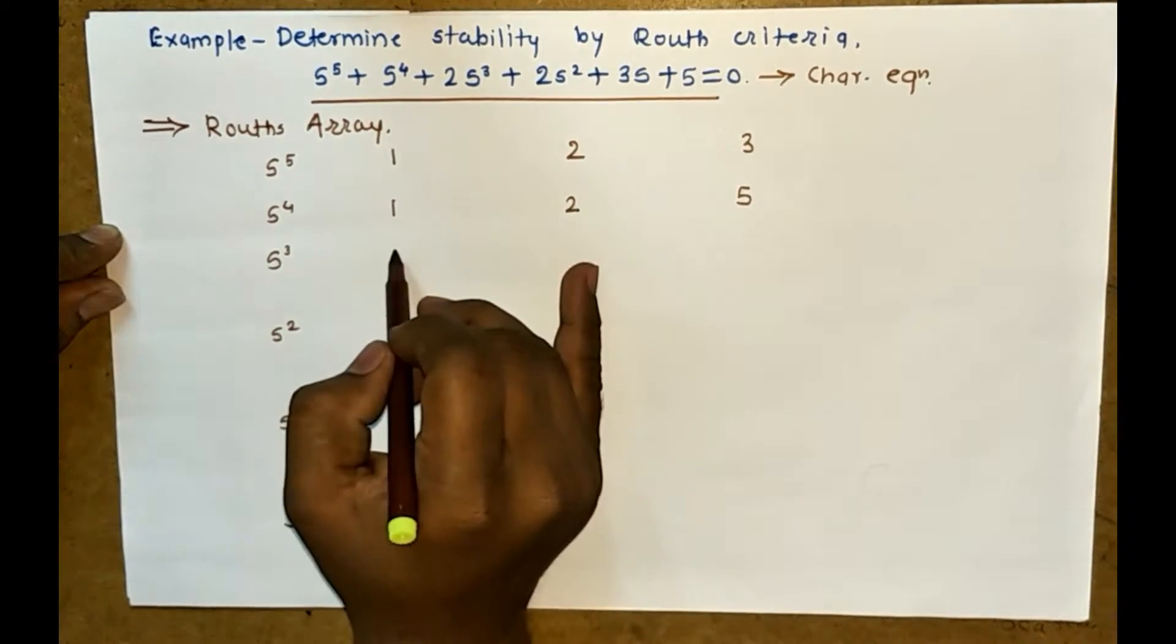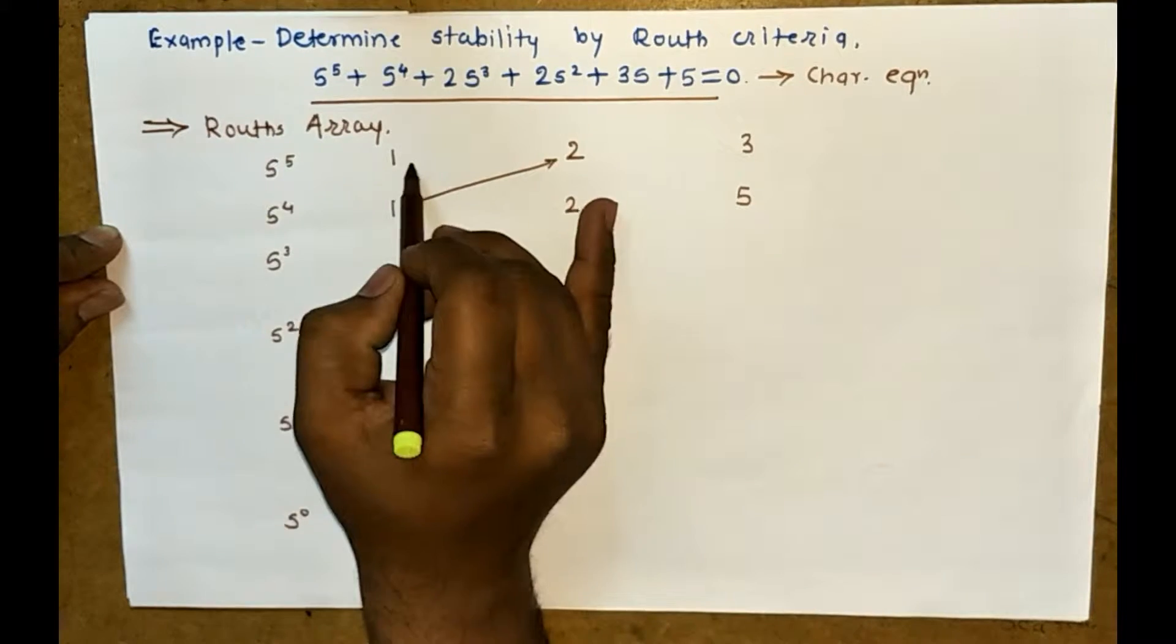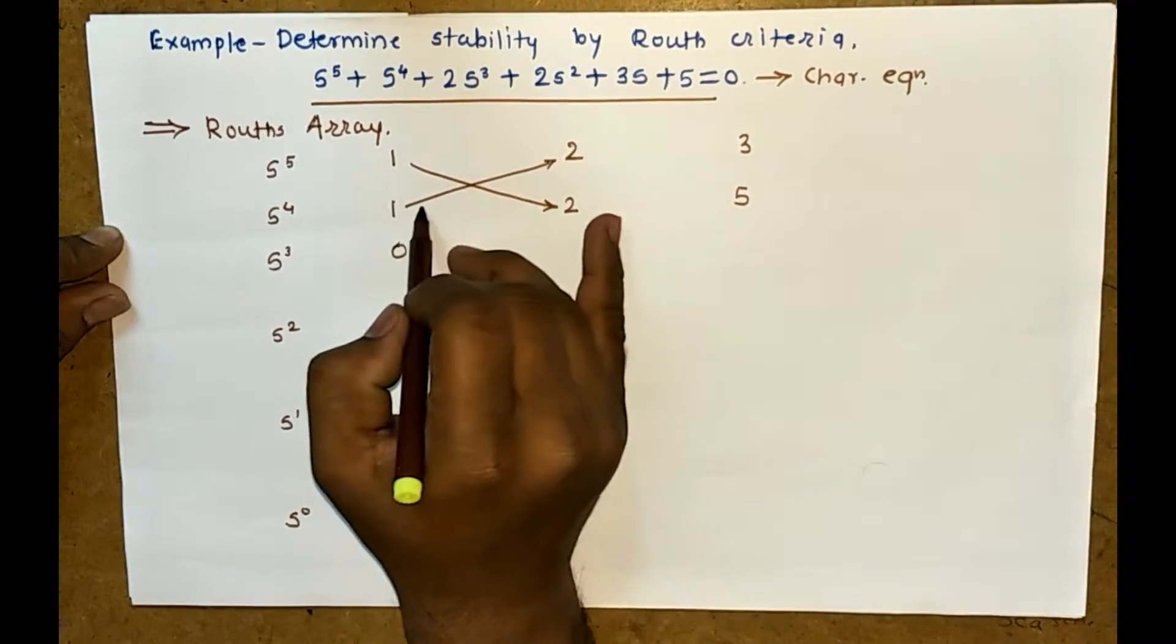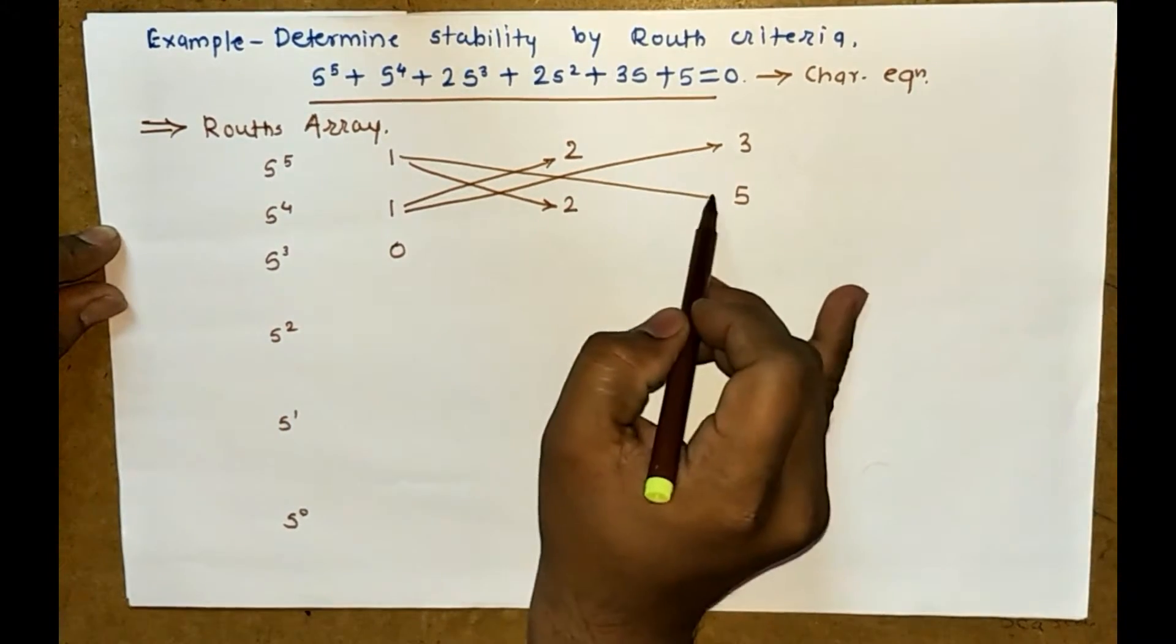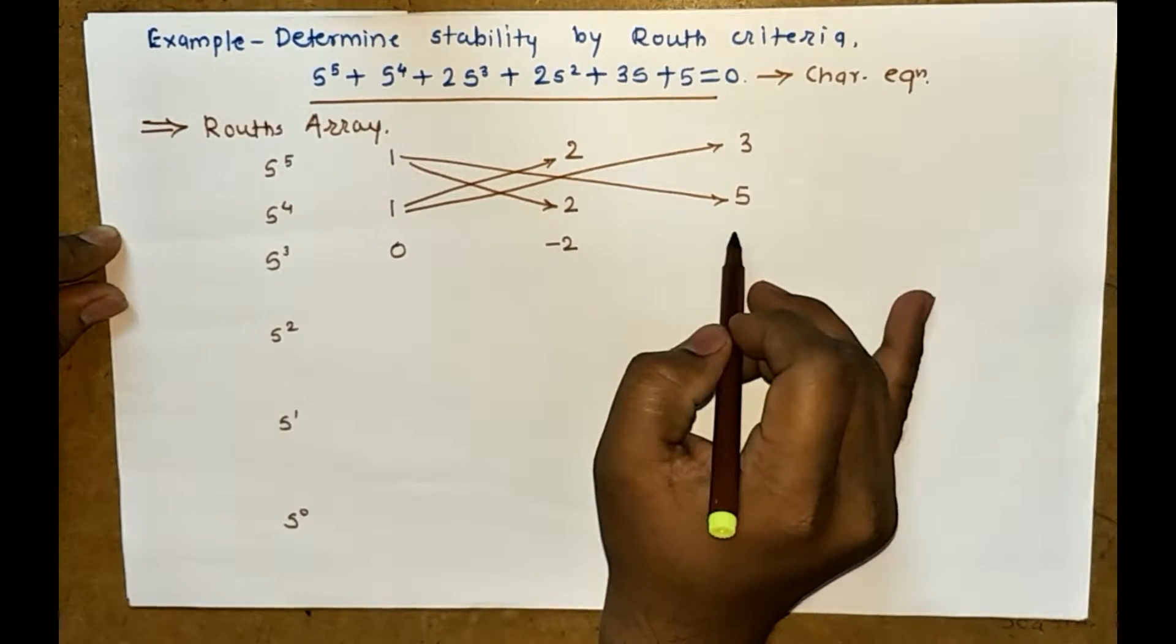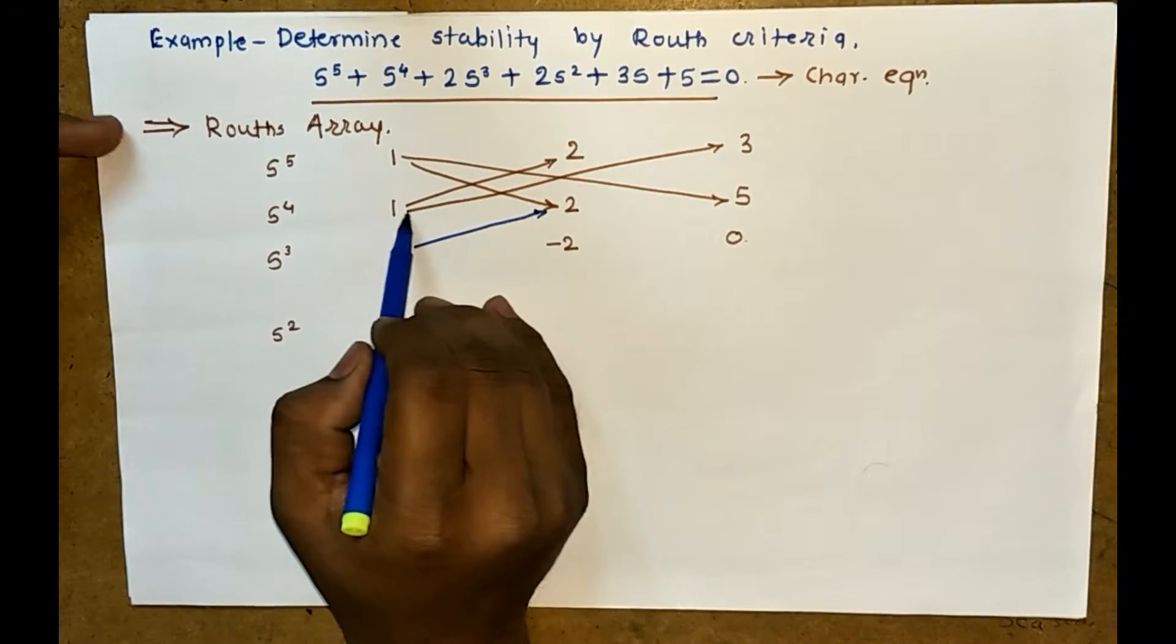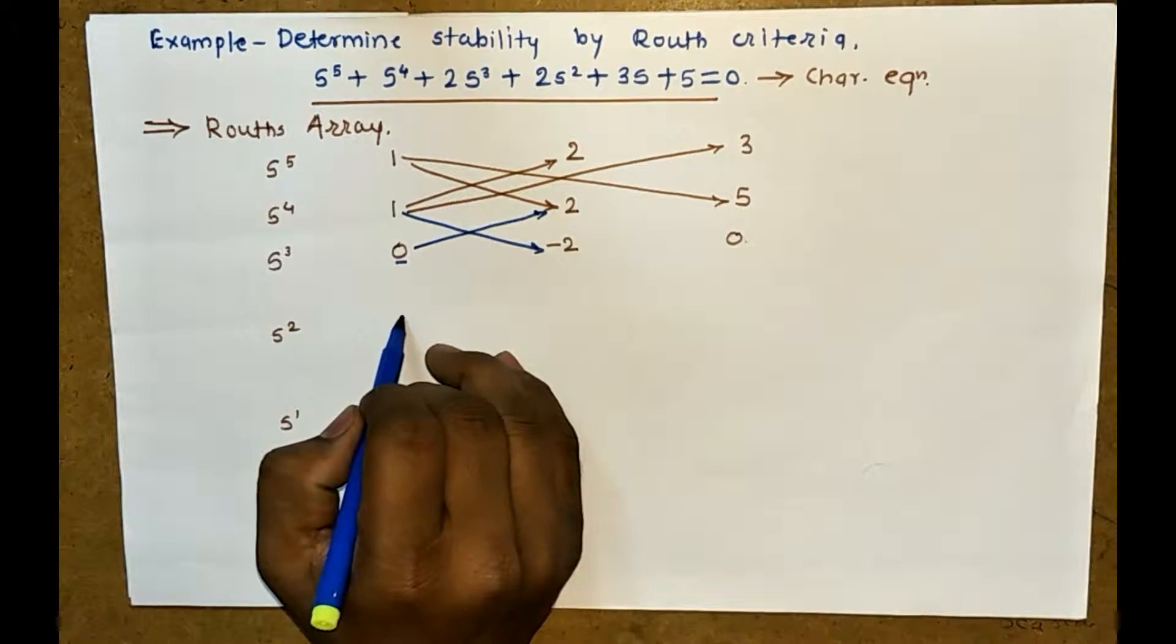Now we have to solve the determinant: 1 times 2 minus 1 times 2 divided by 1, so we get answer 0. Then 1 times 3 minus 1 times 5, here we get minus 2. For the next row, 0 times 2 minus 1 times minus 2 divided by 0. At the denominator we get 0, so the answer is infinity.